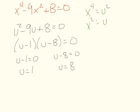Now here's where people make a mistake — you feel done, but you're solving for x, not the made-up u. We check back and see that u equals x squared. So we substitute back: x squared equals 1 and x squared equals 8. Taking the square root of both sides gives x equals plus or minus 1. Remember, when you take the square root you get both a positive and a negative answer.